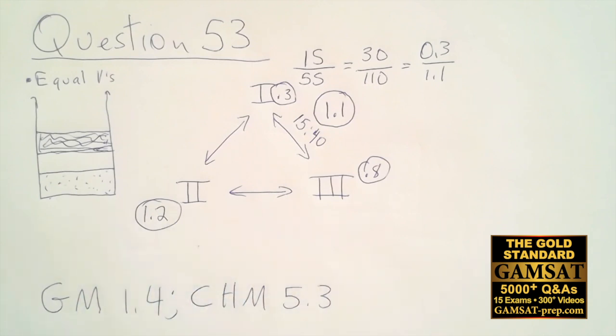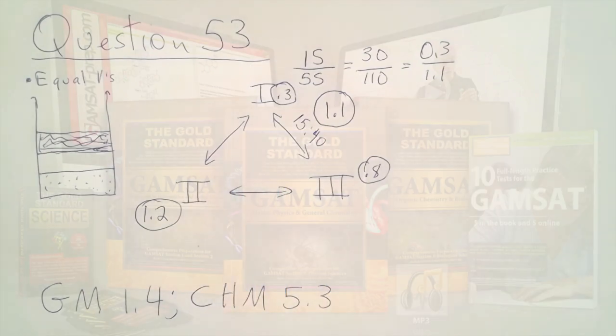Now, just to be clear, that only works because if this is a 3 to 8 ratio, it means that 3 out of 11 is this and 8 out of 11 is this. Therefore it's represented by 0.3 out of 1.1 or 0.8 out of 1.1. So it's only because the total number of moles works out to 1.1 that you could reduce this, and it might save just a little bit of time.